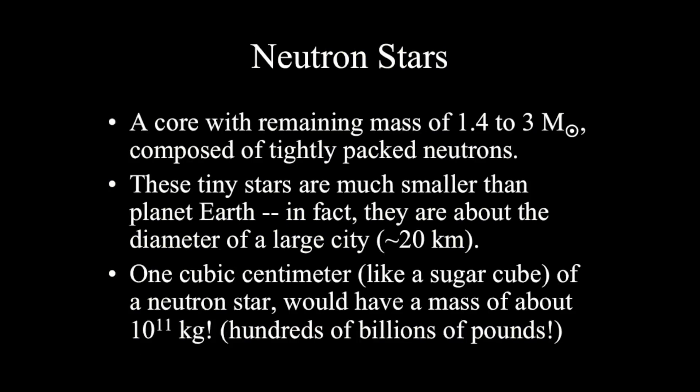So neutron stars. These are objects that are the collapsed cores of high mass stars, and when the iron core collapses down to gravity, the electrons and the protons of the atoms of this iron actually fuse together to make neutrons. And this tightly packed ball of neutrons is able to hold itself up against gravity.